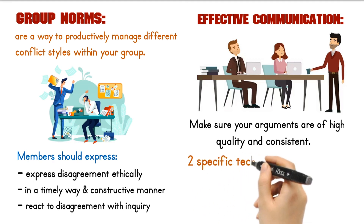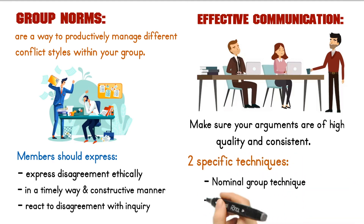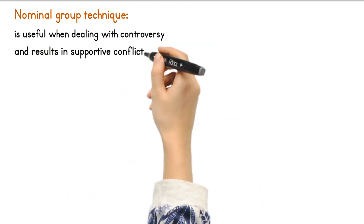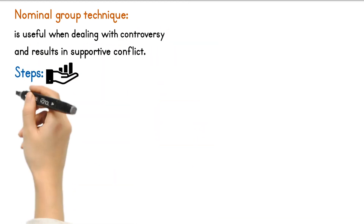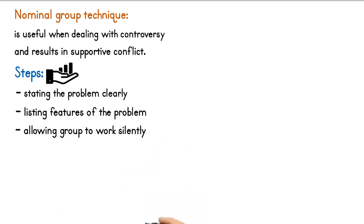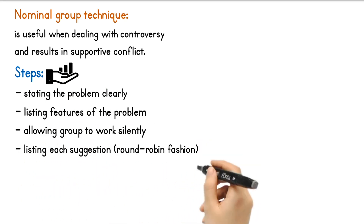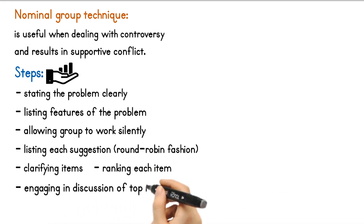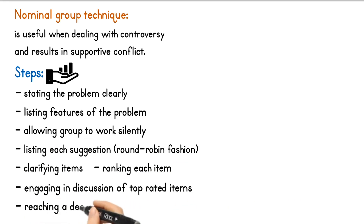Two specific techniques for managing conflict in the group are the nominal group technique and principled negotiation. The nominal group technique is useful when dealing with controversy and results in supportive conflict. The steps include stating the problem clearly, listing features of the problem, allowing the group to work silently, listing each suggestion in a round-robin fashion, clarifying items, ranking each item, engaging in a discussion of top-rated items, and reaching a decision.